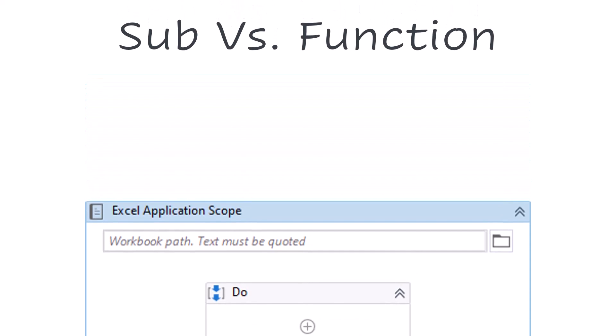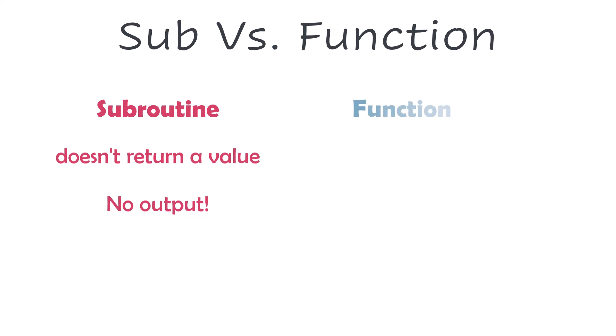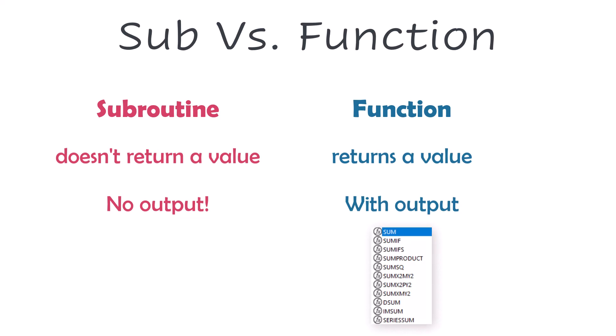Let's talk about sub and function. Sub stands for subroutine — it's a part of code to perform a specific task, but it doesn't return a value, meaning we don't have an output from this macro type. Function is the same as sub but it returns a value, so we have an output. Functions can also be used in Excel directly like any standard function, for example to get the sum of numbers from different cells. In summary, we use sub when we don't want to return an output, and we use function when we want to return an output.